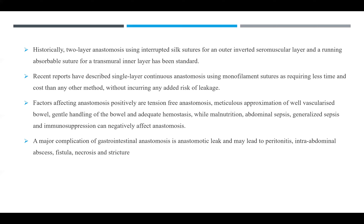Historically, the two-layer anastomosis was done by interrupted silk sutures for an outer inverted seromuscular layer and by a running transmural layer with absorbable suture. Recently, the single-layer continuous anastomosis using monofilament sutures has shown that it requires less time and less cost compared to other methods without causing any added risk of leakage. Factors positively affecting anastomosis include tension-free anastomosis, meticulous approximation of well-vascularized bowel, gentle handling, and adequate hemostasis. Factors negatively affecting anastomosis include malnutrition, abdominal sepsis, generalized sepsis, and immunosuppression. The major complication is anastomotic leak, which leads to peritonitis, intra-abdominal abscess, fistula, necrosis, and sometimes stricture.